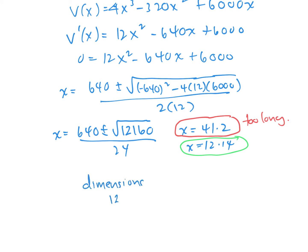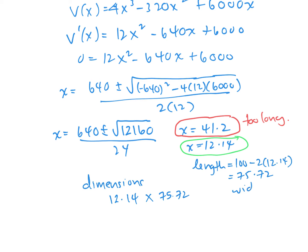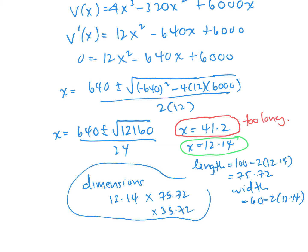The dimensions of the box are: height of 12.14 cm, length of 100 minus 2 times 12.14, which is 75.72 cm, and width of 60 minus 2 times 12.14, which is 35.72 cm. Always check that your solutions are valid in the context of the question.